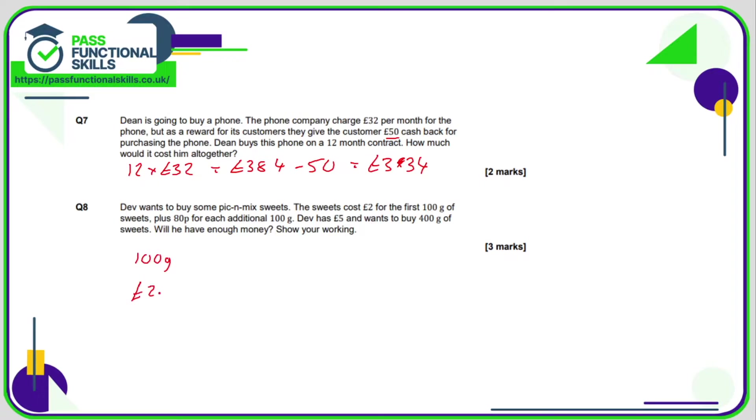Question number eight: the pick and mix is £2 for the first 100 grams, and then for every other 100 grams it's 80p. Now Dev is going to buy 400 grams, so there's 100 grams and then he's going to have three lots of the 100 grams at 80p. So this part here comes to £2.40, plus the £2—in total it's going to cost him £4.40. If he's got a fiver, then yes he does have enough money. He's got 60p left over.